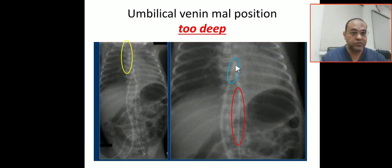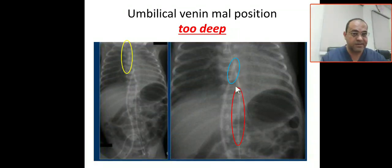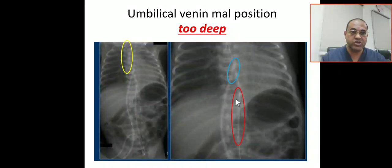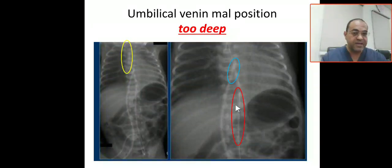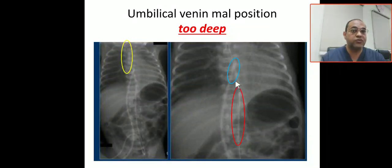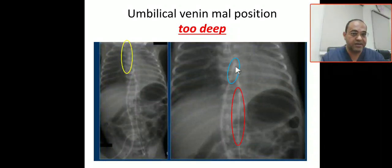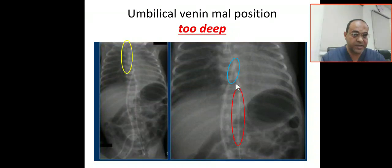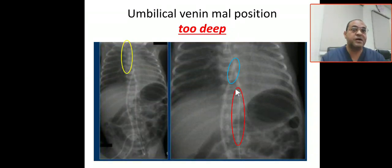Looking at the umbilical arterial catheter, it is also not in the proper position. It is at T10, but it should be between T6 and T9 — above the diaphragm. So this is an abnormal position for the umbilical arterial catheter.